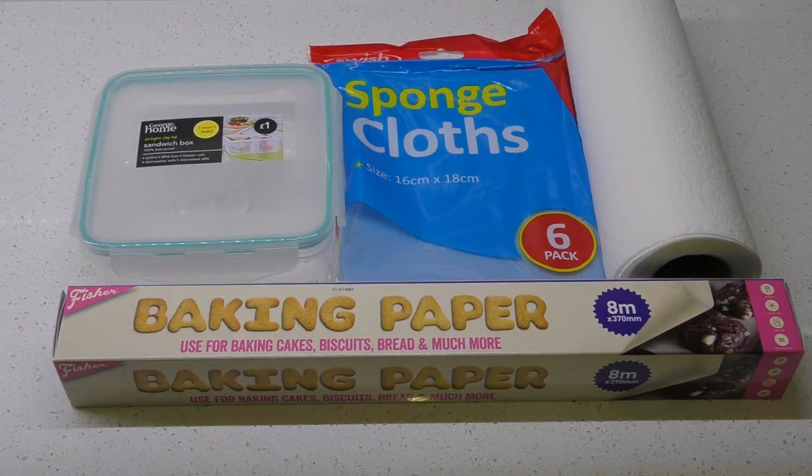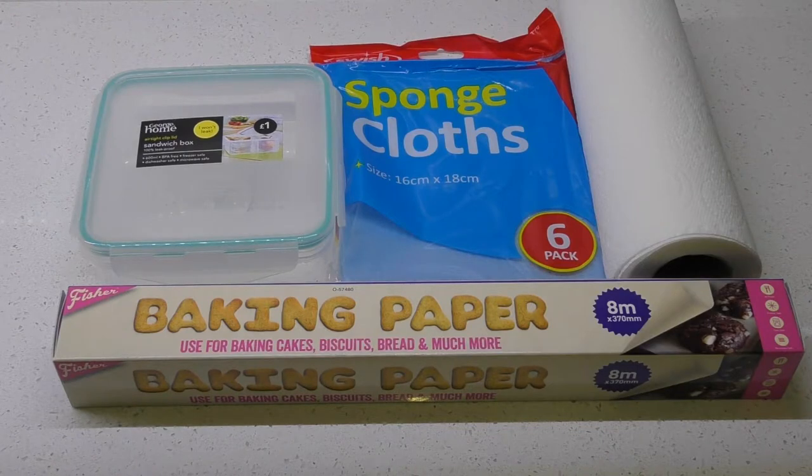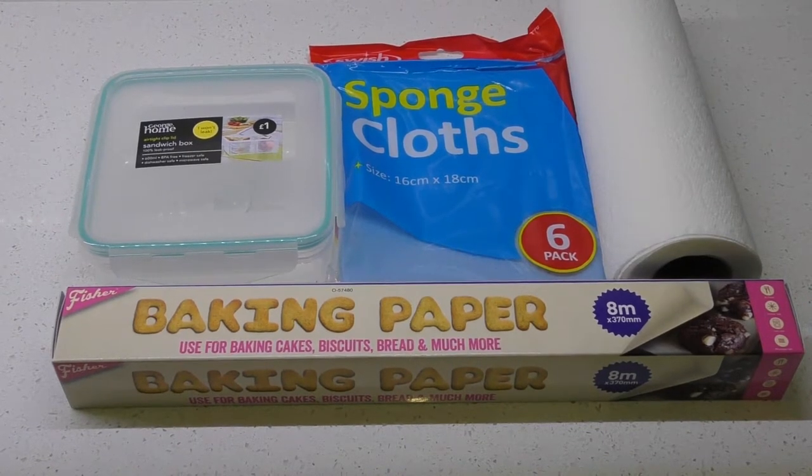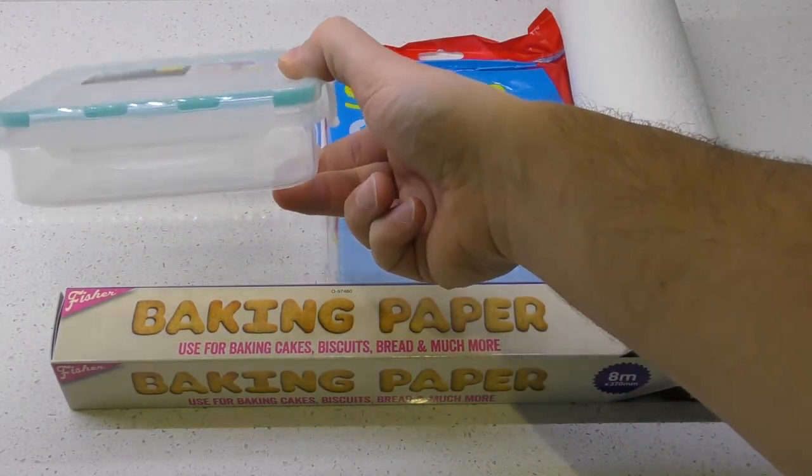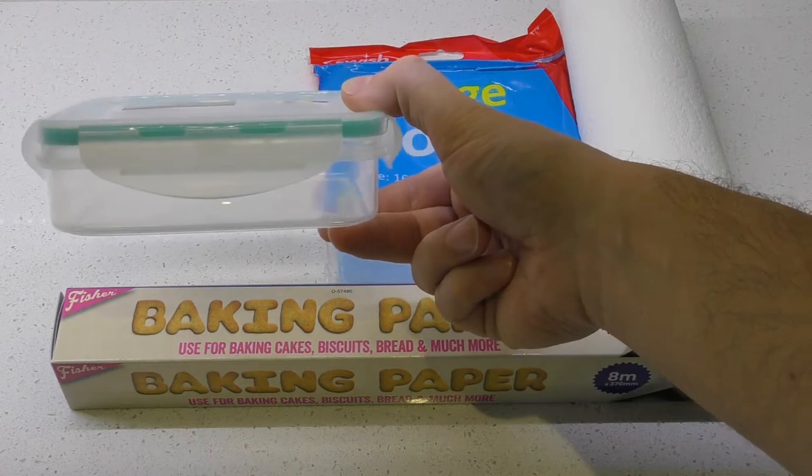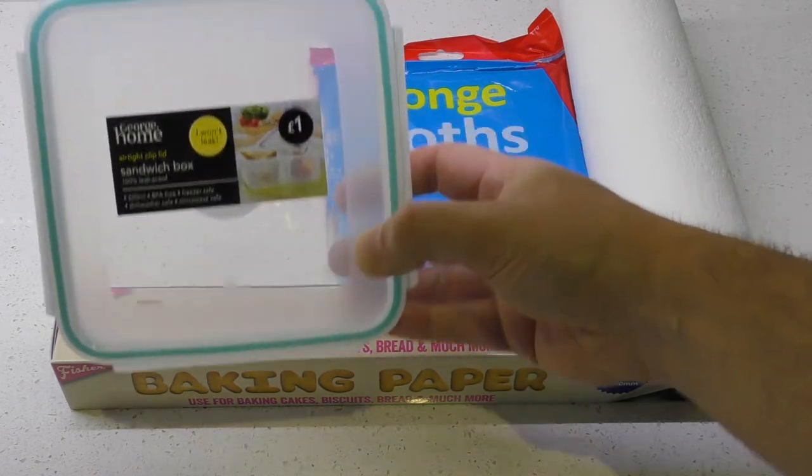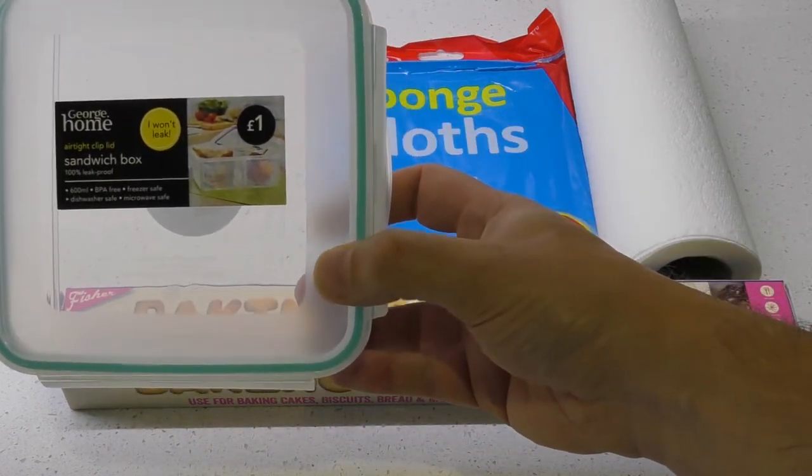You can buy these already made or professional versions, however I'm showing you a really cheap way to do this. We've got a little Tupperware sandwich tub here. The reason we have these sandwich tubs is because they're quite thin and that's really helpful. This one I bought from Asda for one pound.